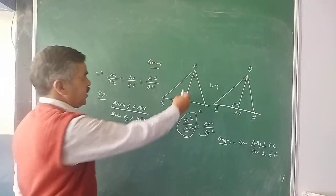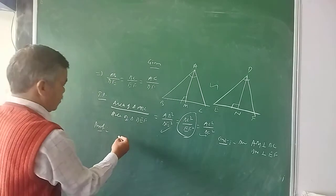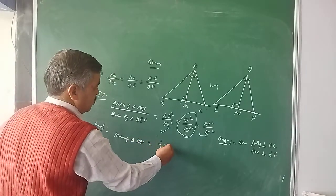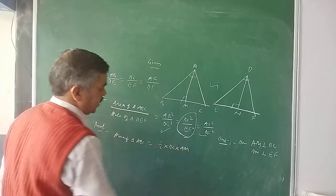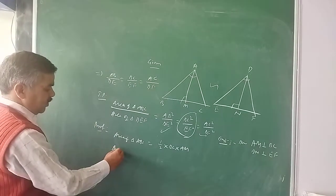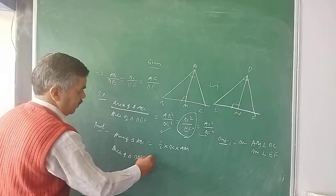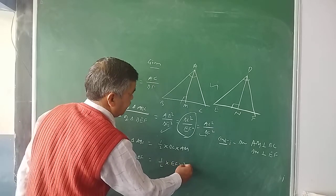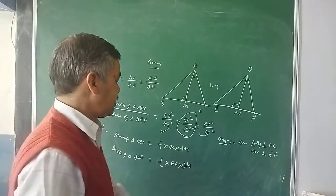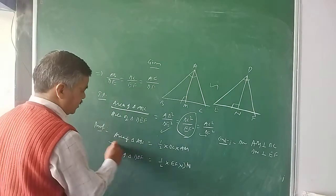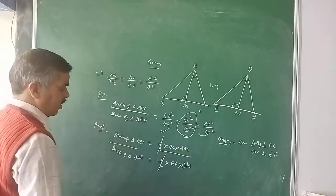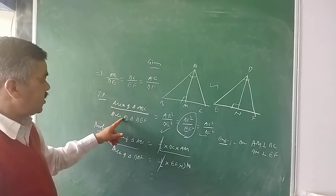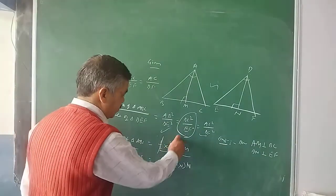Now if I speak about the area of triangle ABC in terms of base and height: area of triangle ABC is equal to half into base BC into height AM. Similarly, area of triangle DEF is equal to half into EF into DN. That is the altitude — half into base into height. If you are looking for the ratio, let us divide these two — equation one and two. Half and half cancel. So I am reaching: BC upon EF. I need to prove area of triangle ABC upon area of triangle DEF is equal to BC square upon EF square. So one BC and EF is already there.